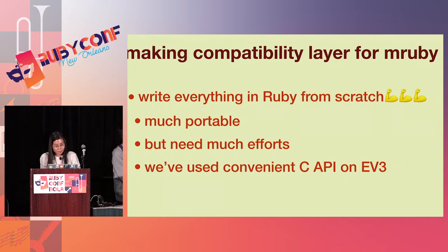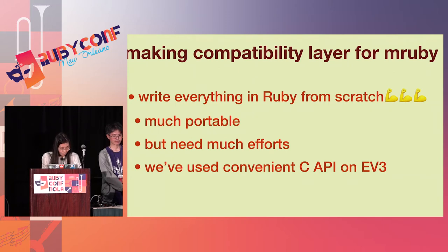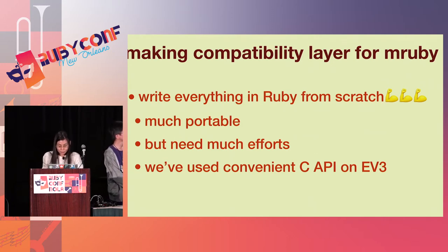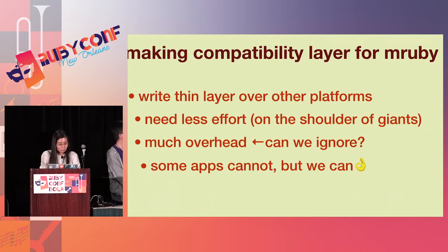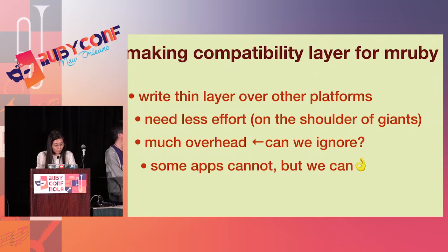It's not impossible to write low-level APIs in C and every other API in Ruby from scratch. If we do so, it's more portable at the Ruby layer, but this policy requires a lot of work. We have already used EV3 high-level C APIs and we can use embedded libraries — we don't want to rewrite them in Ruby. Instead, we make a layer over other platforms. Using multiple layers, we might have performance overhead, but we don't have strict performance requirements.